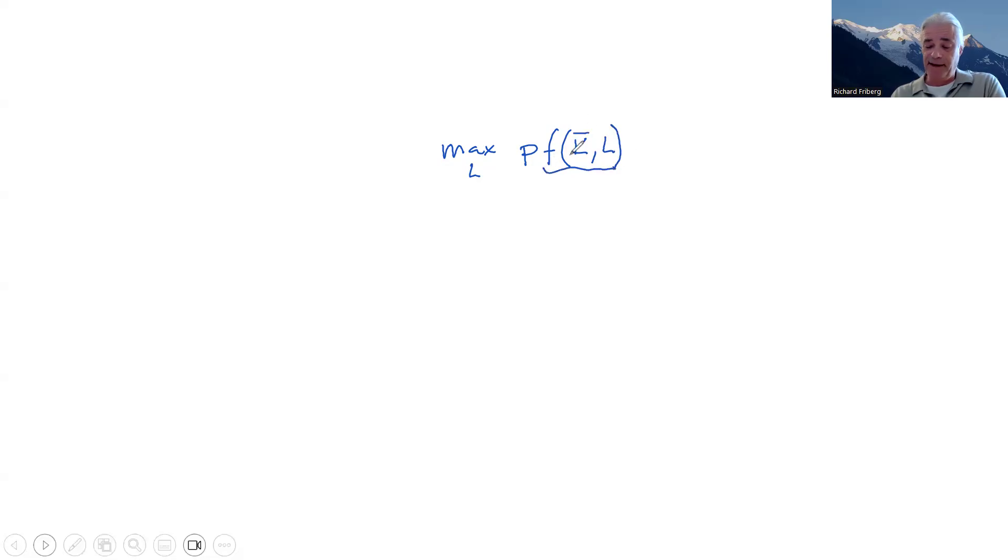So we could think of K upper bar and L. So you could think of that as Q quantity. So K upper bar here is some level of capital that's fixed. We think of this as a short run, so capital is fixed. And then you decide how much labor to hire.